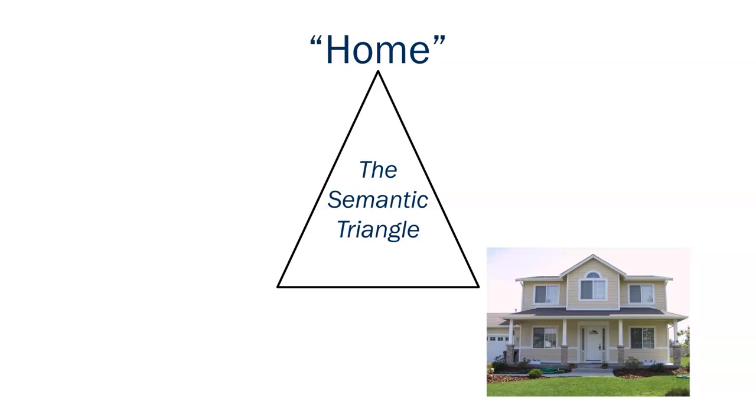The second point of the triangle represents the denotative meaning of the word or symbol. In this case, if we were to look up the word home in the dictionary, we would likely find a description of a structure commonly used as a residence with walls, a roof, doors, and windows.